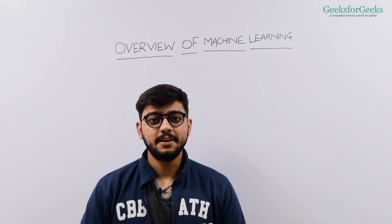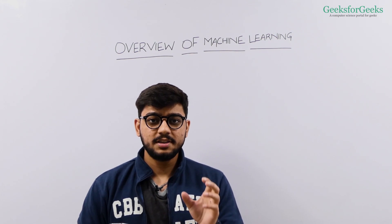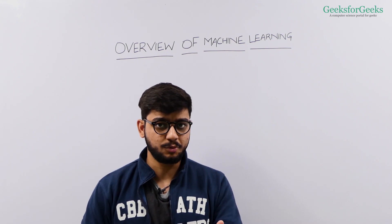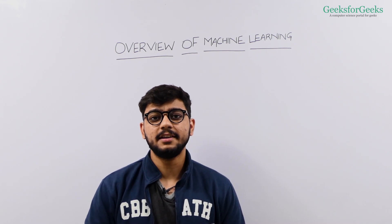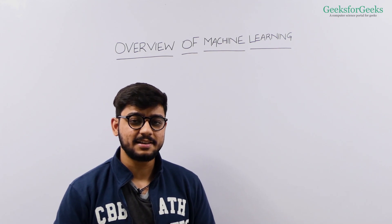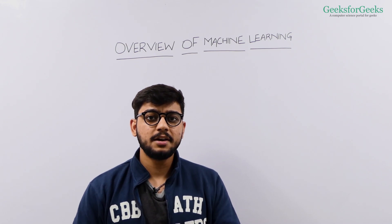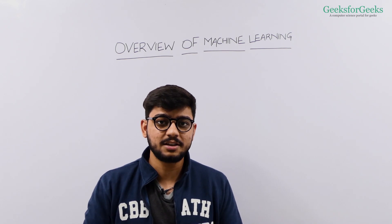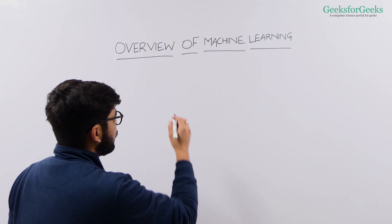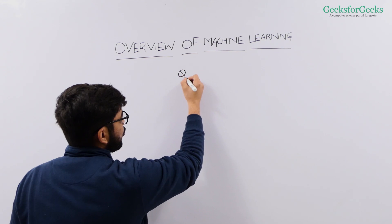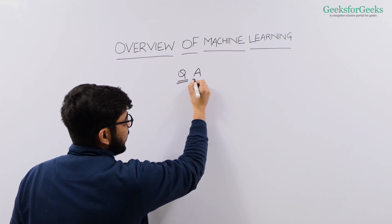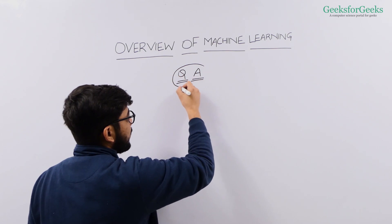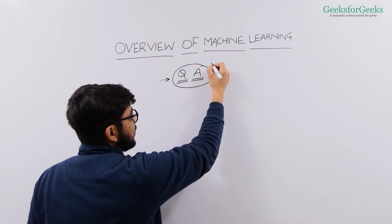Now let's understand learning in machine learning. Machine learning means the machine is learning without being explicitly programmed. But what actually is learning? Let's take a very basic example. You have gone to school where you studied different lectures and then went for examinations. What is actually happening is you go to class, your teacher gives you questions and answers, and you study — you have notes that you prepared in class lectures.